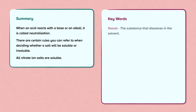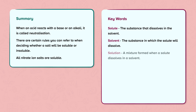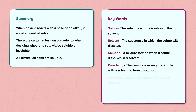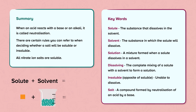Keywords: Solute — the substance that dissolves in the solvent. Solvent — the substance in which the solute will dissolve. Solution — a mixture formed when a solute dissolves in a solvent. Dissolving — the complete mixing of a solute with a solvent to form a solution. Insoluble — opposite of soluble; unable to dissolve. Salt — a compound formed by neutralisation of an acid by a base.